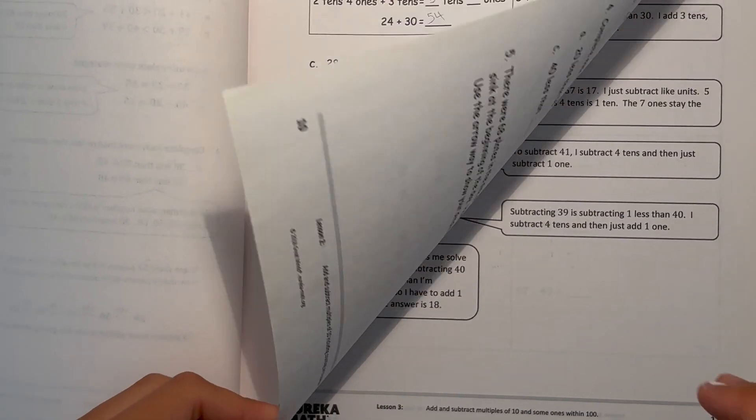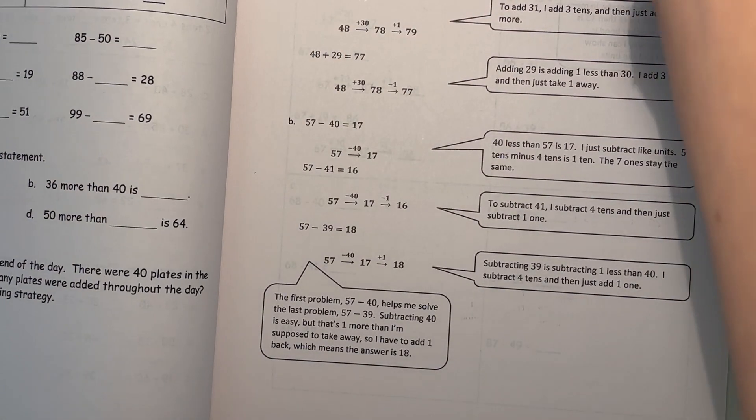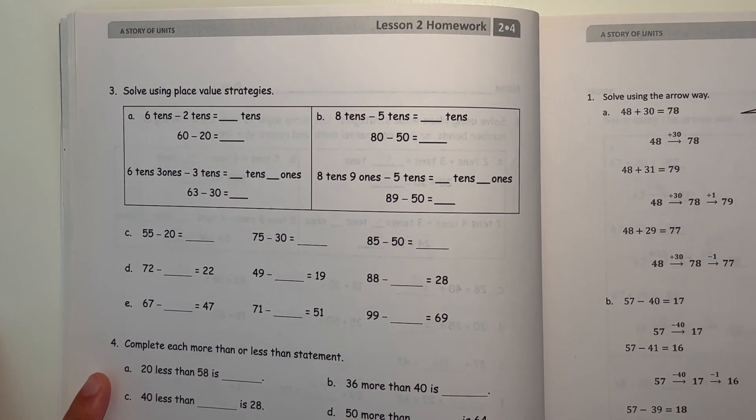And F, 35 plus 50 is 85. That's 26 plus 60 is 86. So 86 is greater by 1. Alright, next page.